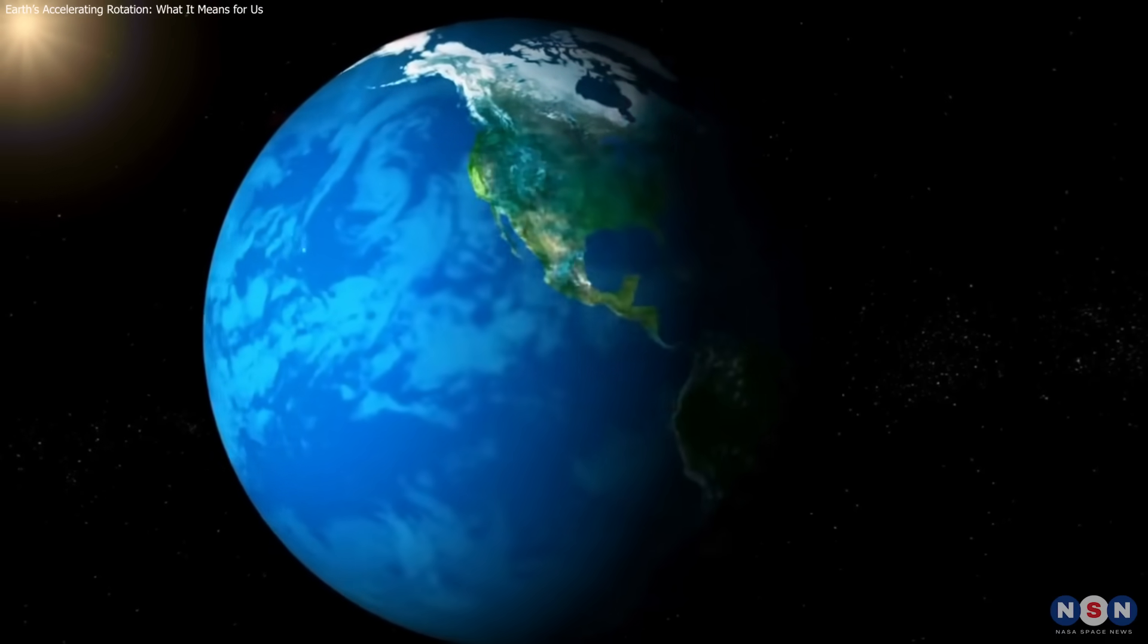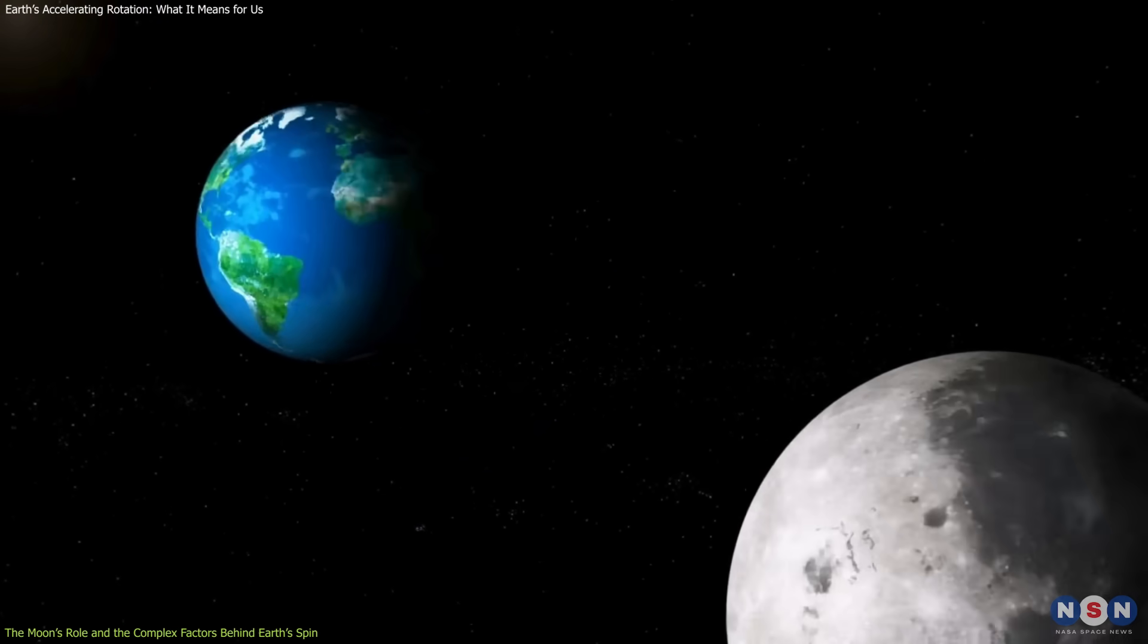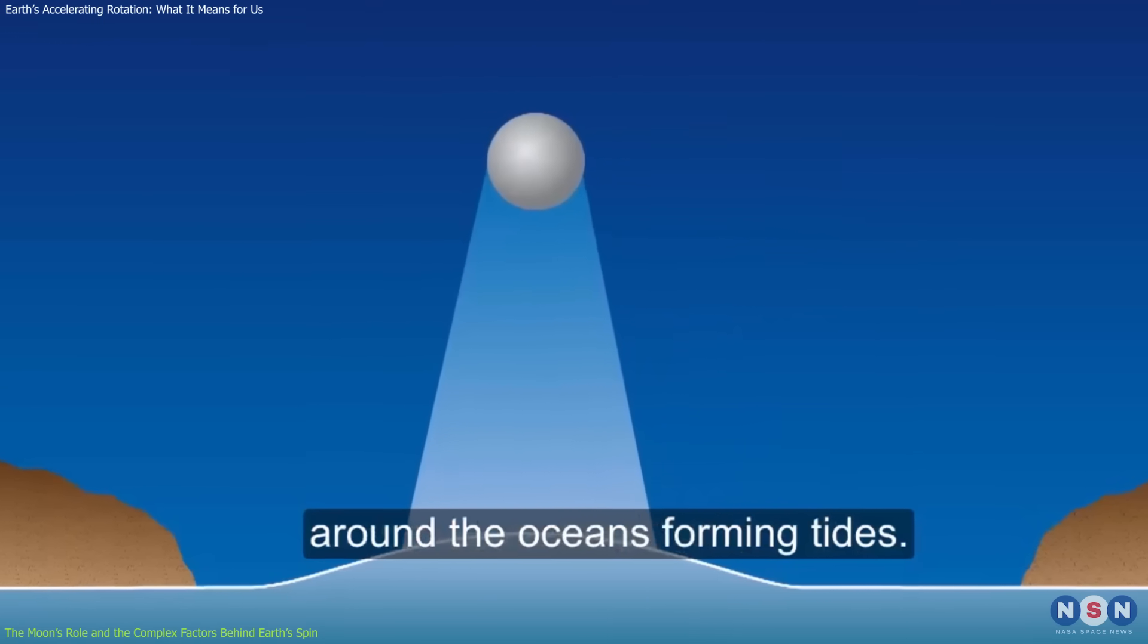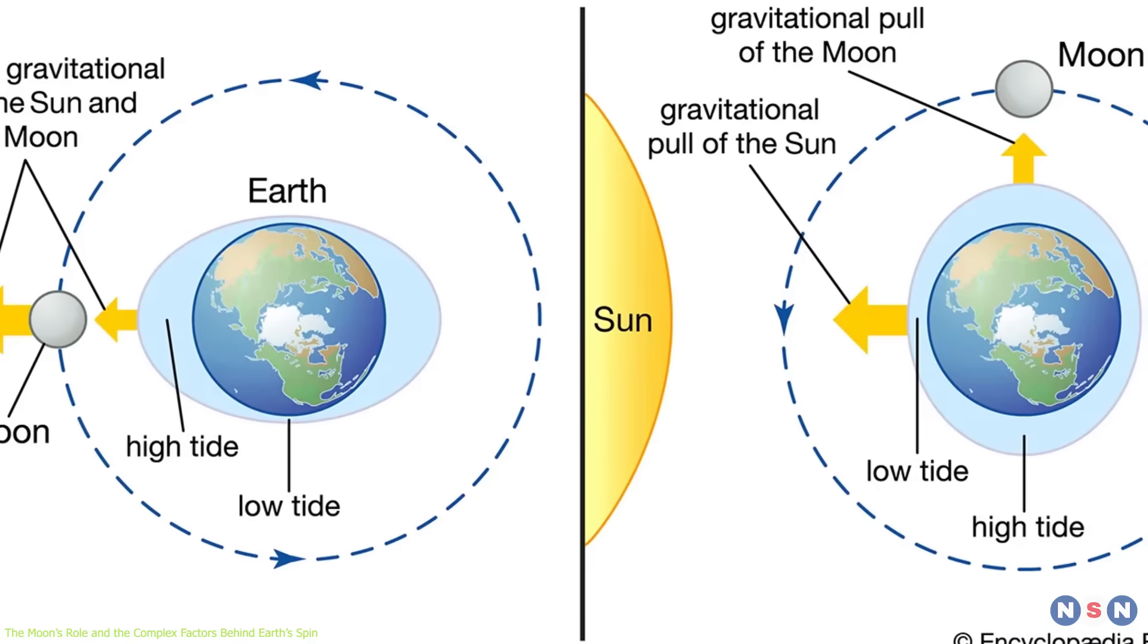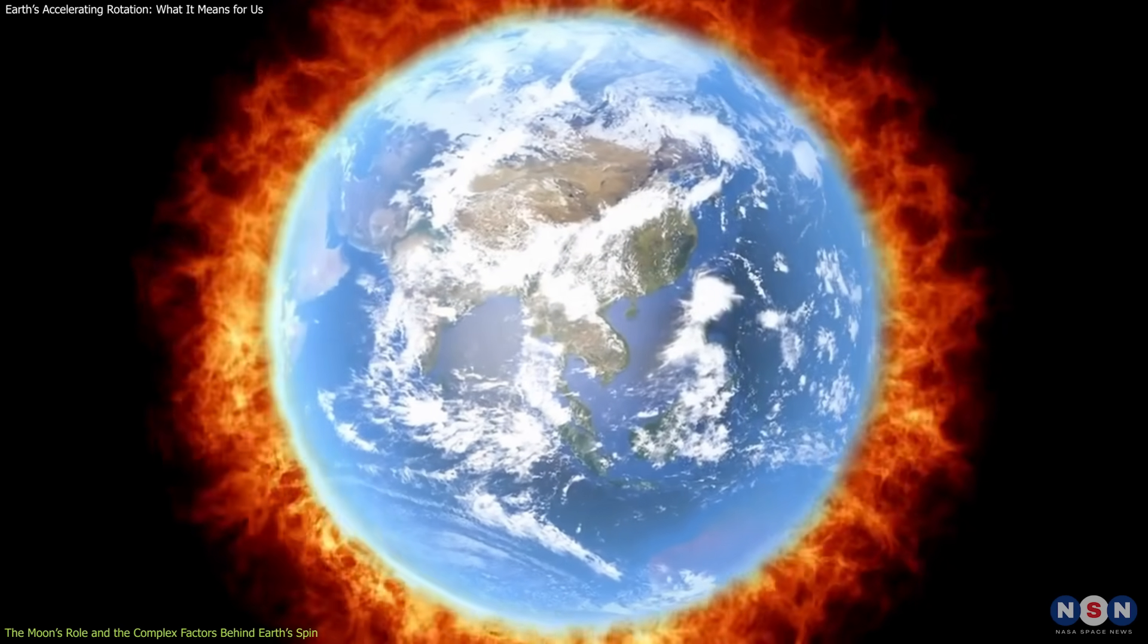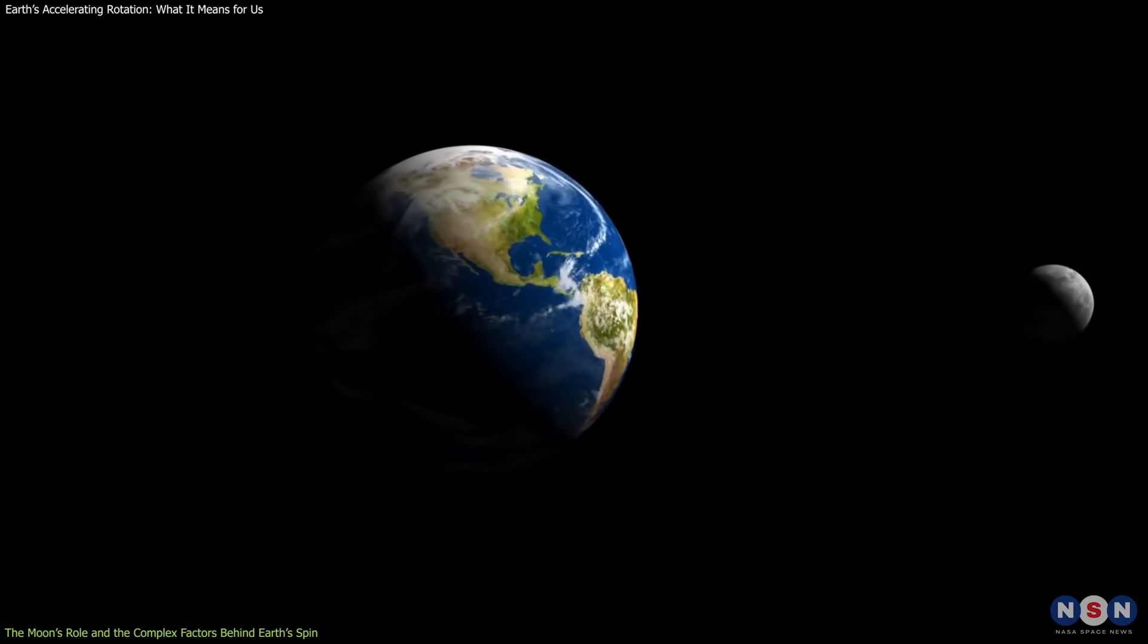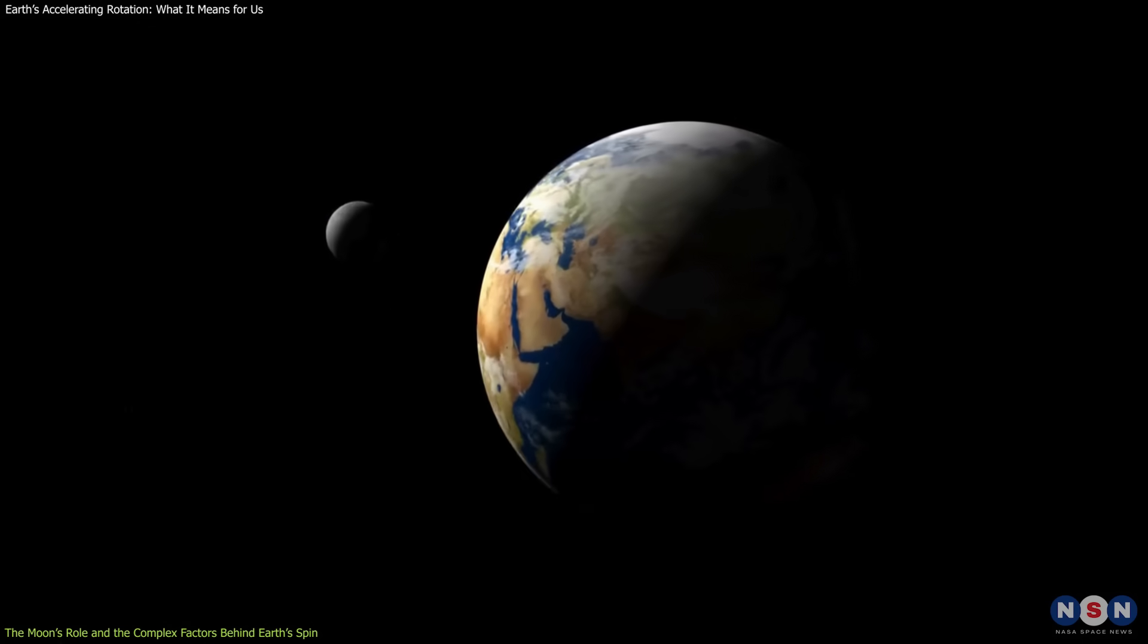The moon's influence on Earth's rotation is complex and not limited to gravitational pull alone. The moon's gravitational force causes tidal bulges in Earth's oceans, exerting friction on the planet's crust. This friction gradually transfers Earth's rotational energy into heat, slowing down the planet over time. However, this process is not constant.